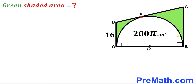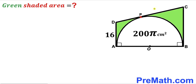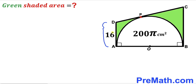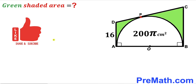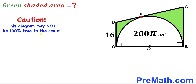Welcome to pre-math. In this video we have a semi-circle with center O fully inscribed in a trapezoid ABCD, such that point P is the point of tangency. The area of this semi-circle has been given as 200π cm². Furthermore, side AD of this trapezoid is 16 cm, and our task is to calculate the area of the green shaded region.